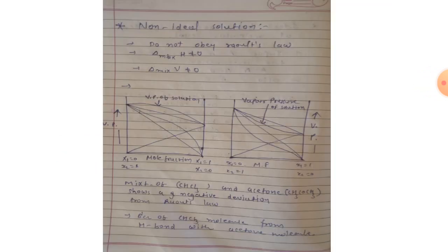We now start our next topic: non-ideal solution. When a solution does not obey Raoult's law over the entire range of concentration, then it is called a non-ideal solution. The vapor pressure of such a solution is either higher or lower than predicted by Raoult's law. If it is higher, the solution exhibits positive deviation, and if it is lower, it exhibits negative deviation from Raoult's law.